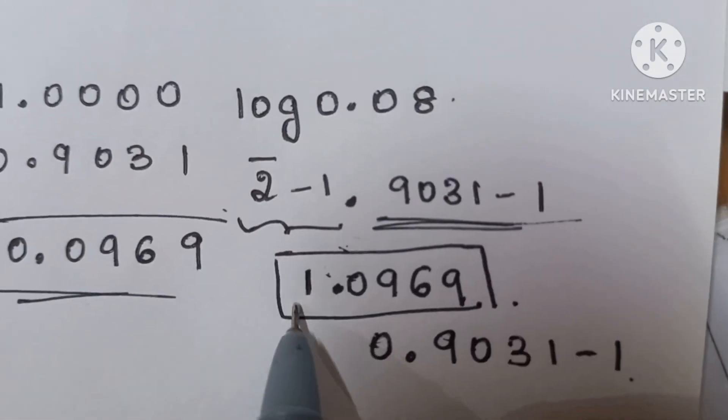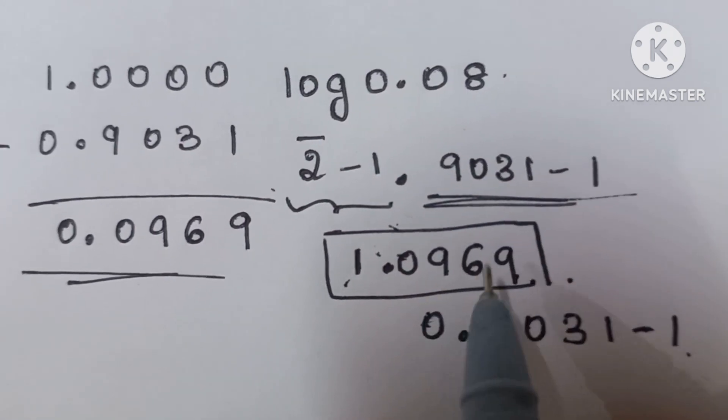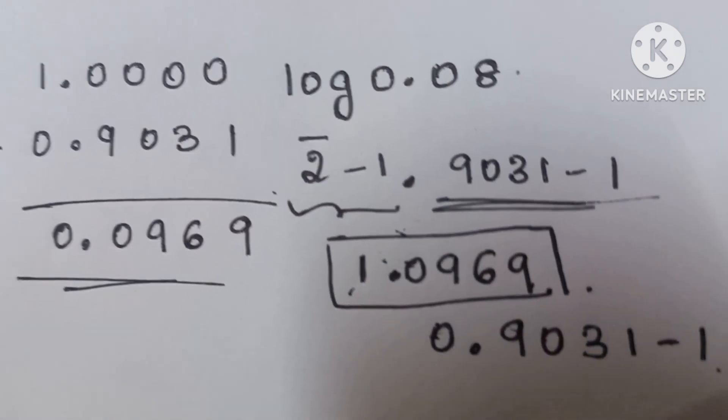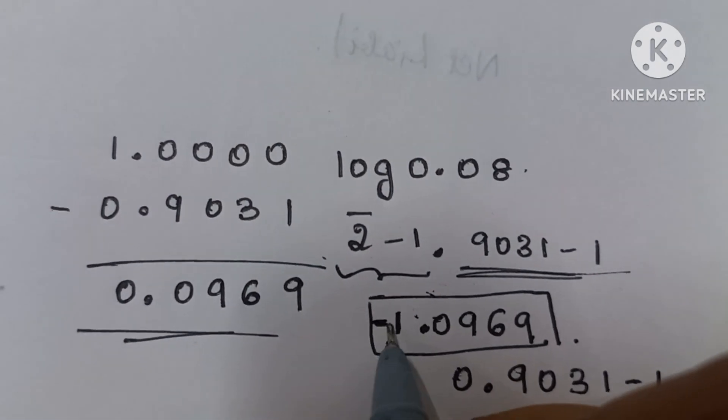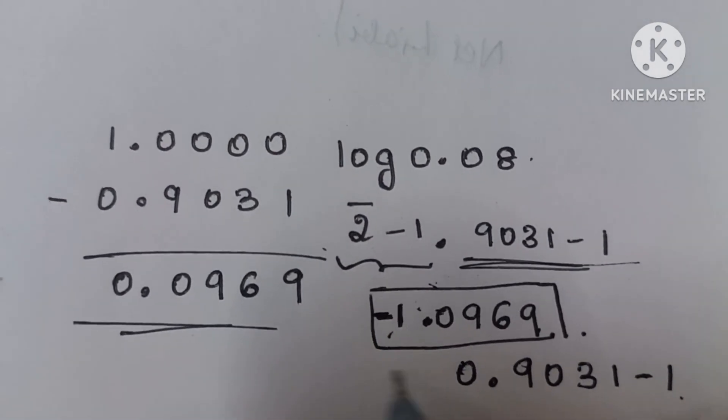2 minus 1 is 1, and it is 1 bar 0.0969, the answer we got. Please note our answer will be minus 1.0969.